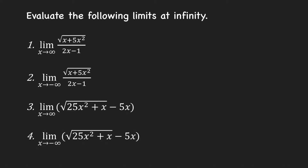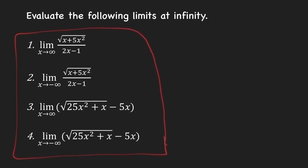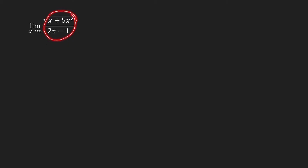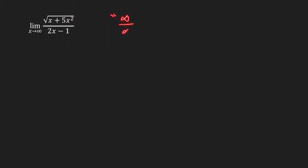In this video, we're going to evaluate the following limits at infinity. Let us find the limit of this as x goes to infinity. If we look at the form of this limit as x goes to infinity, the numerator also goes to infinity and the denominator goes to infinity. So we have a form infinity over infinity, and this is an indeterminate form. So you need to do extra effort in order to evaluate the limit.